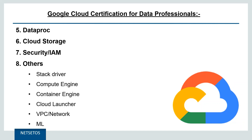Next is data migration — how you will manage your Hadoop on-premises system and migrate to Google Cloud. There is also cloud storage, similar to Amazon S3, along with GCP cloud storage and related topics.